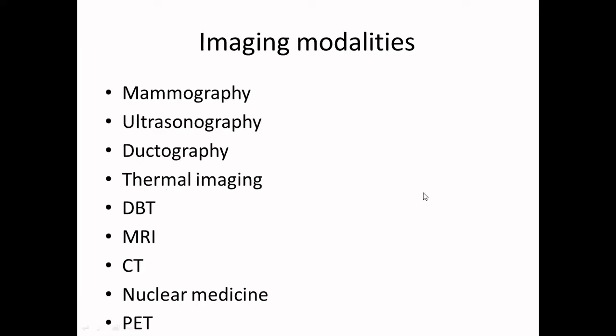MRI has its own role in breast tissue imaging. CT scans also have a role. Nuclear medicine and PET scans are used especially in unknown secondaries elsewhere and for metastatic screening.